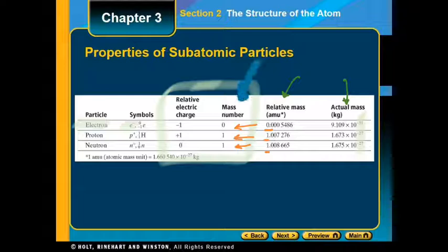Mass number: make sure you get those down for the electron, proton, and neutron—0, 1, 1. We will do calculations with those in section 3. And their relative charge: negative 1, positive 1, 0. You will need to know those.